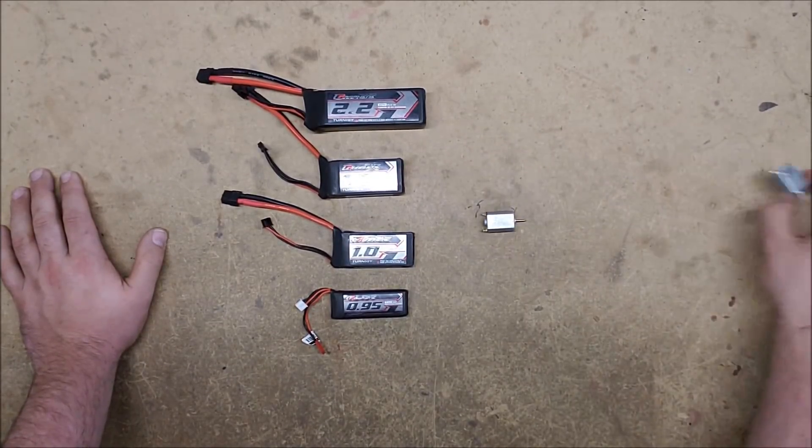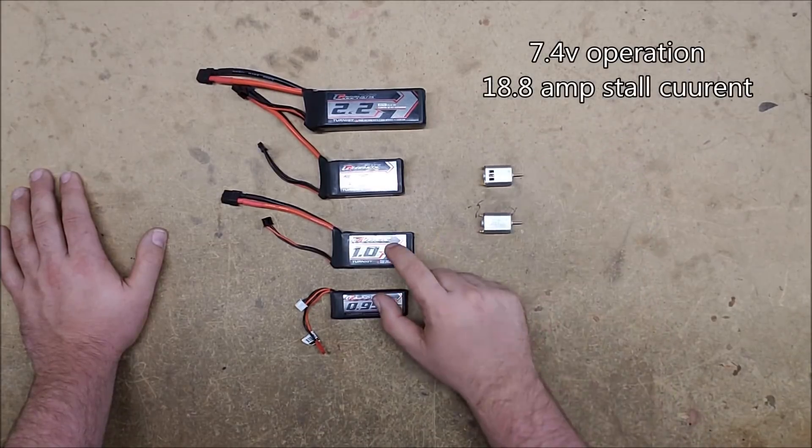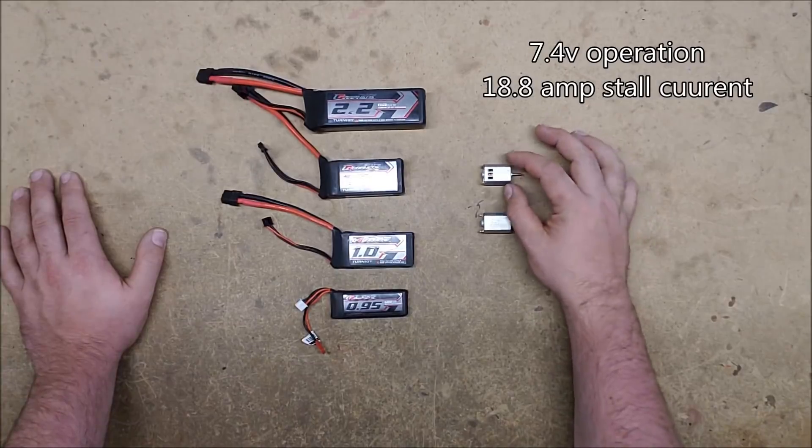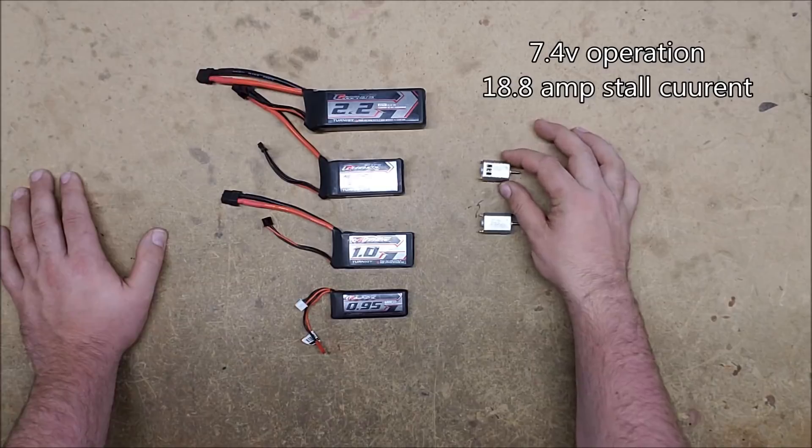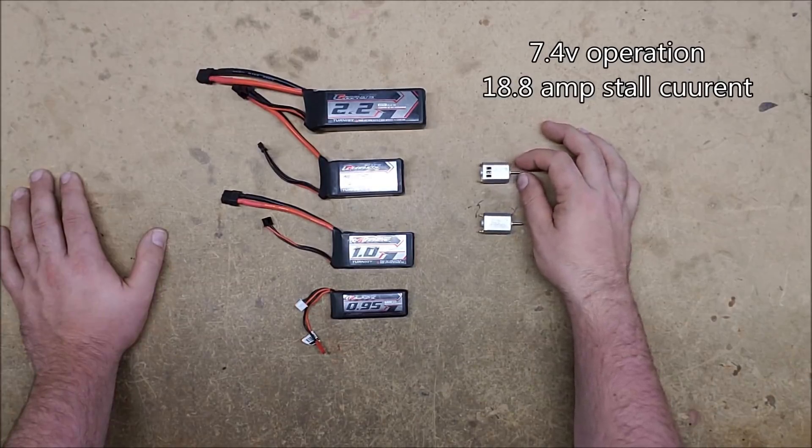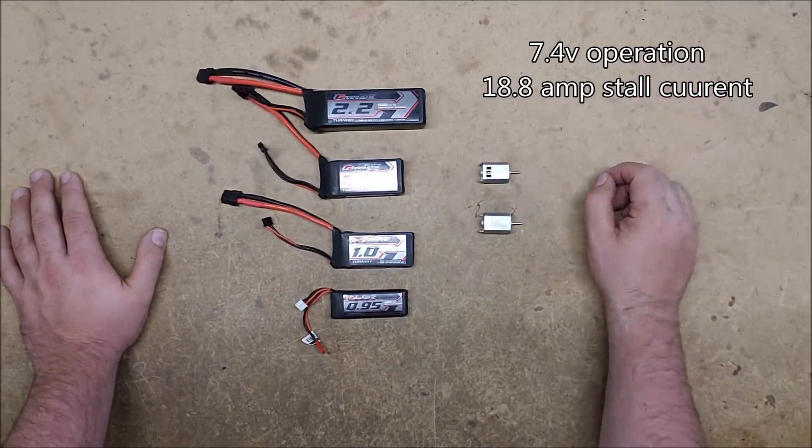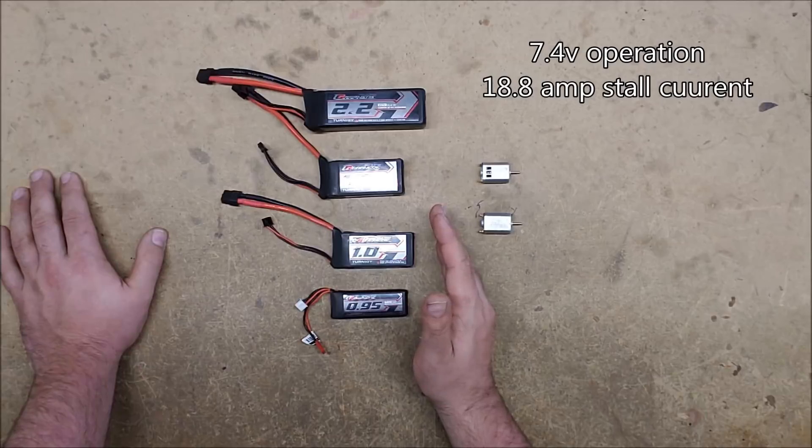By comparison, the Michelle II motors are rated for 2S. They require less voltage, but they have a much higher current. They take 18.8 amps at stall. So running two of them, now you're looking at a considerably higher current requirement. Now all of these are still capable of that.